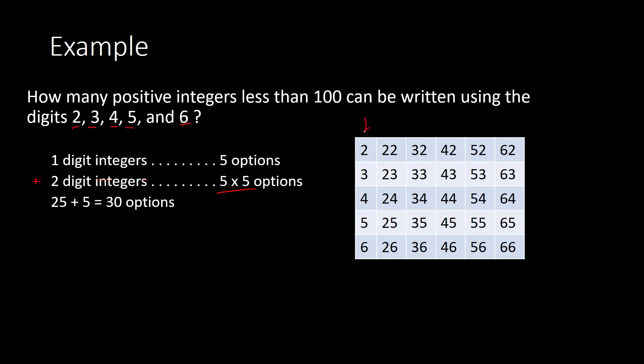If you were to list these out, you'd find this is correct. In one column we have all the one-digit numbers: 2, 3, 4, 5, or 6. The second column contains numbers in the 20s (22 through 26), and we also have the 30s, 40s, 50s, and 60s. Counting all of these up gives 30 options.